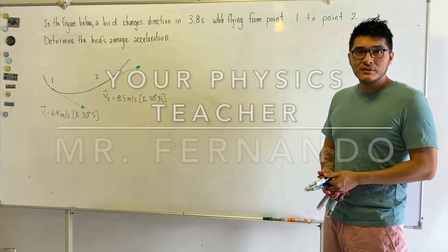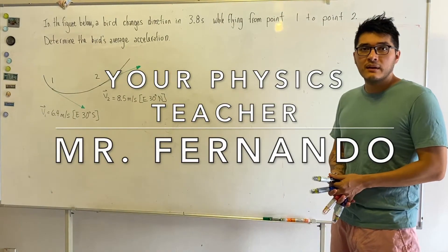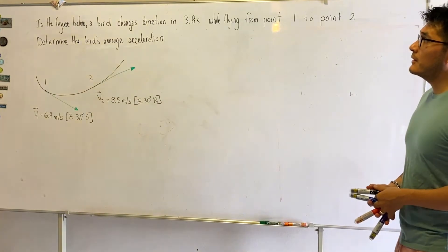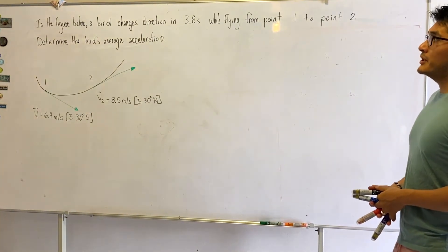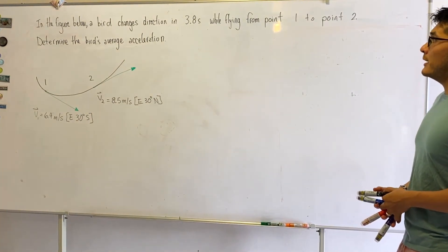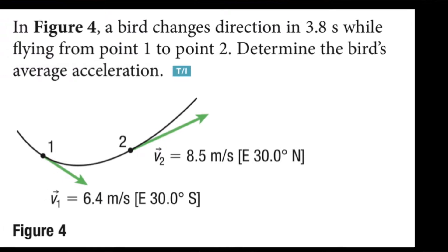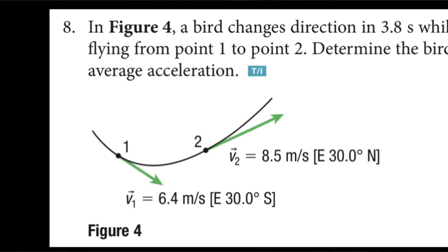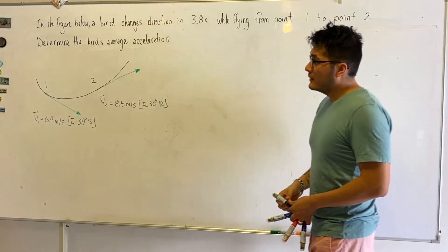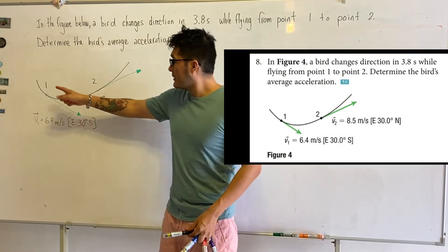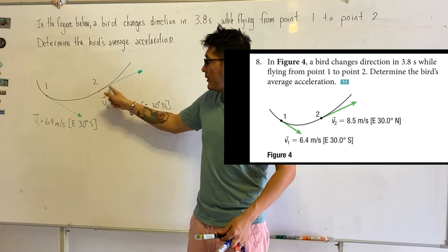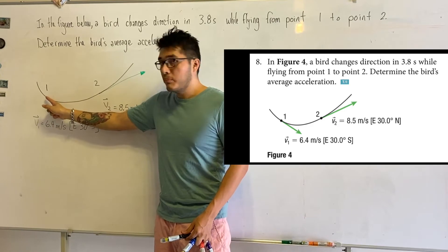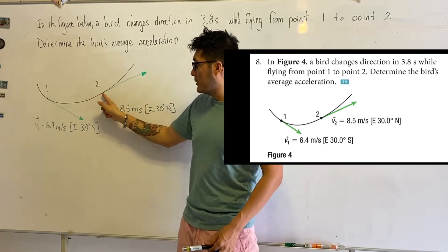Hello, welcome back to your physics teacher. Today we're going to be looking at a question in two dimensions. In the figure below, a bird changes direction in 3.8 seconds while flying from point one to point two, and we want to determine the bird's average acceleration. At two points we are given the velocities, at point one and at point two.